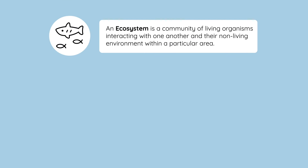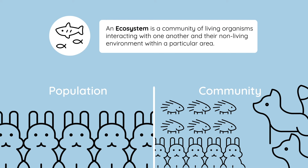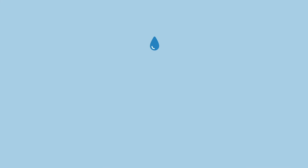Ecosystem. An ecosystem is a community of living organisms interacting with one another and their non-living environment within a particular area. It should be noted that the word 'population' means the number of an individual species in an ecosystem, but 'community' is all of the populations in that area. Ecosystems can be really small, like one single drop of water, or really large, like the entire planet, the Sahara Desert, or the Amazon rainforest.